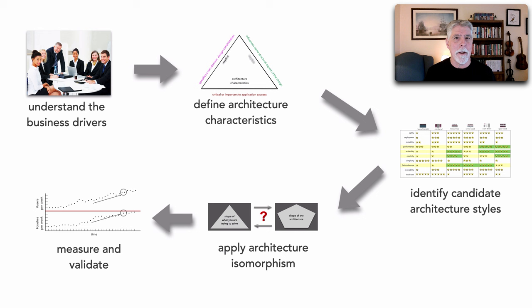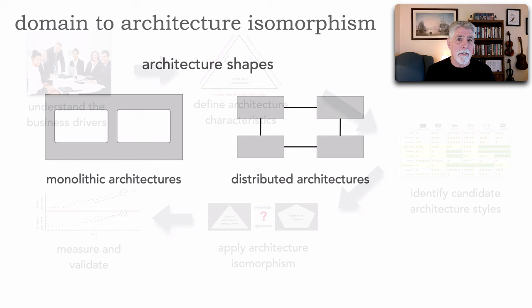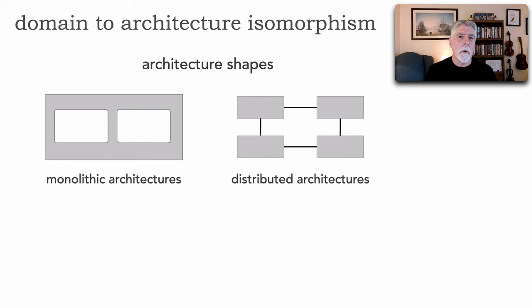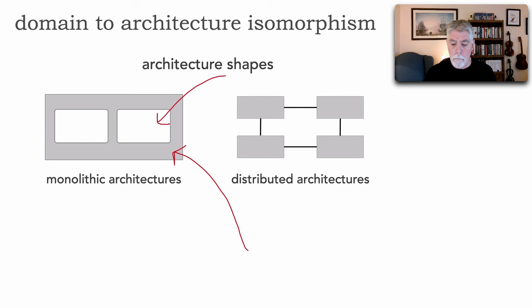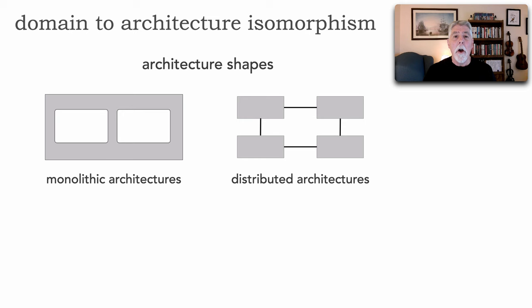In this lesson we're going to take a look at the shapes of eight different architectures — both monolithic and distributed. For monolithic architectures you'll see shapes with an outer gray box representing a single deployment unit, and white boxes representing the architectural components within. On the distributed side there are only gray boxes, each representing a separate deployment unit and the interactions between them.